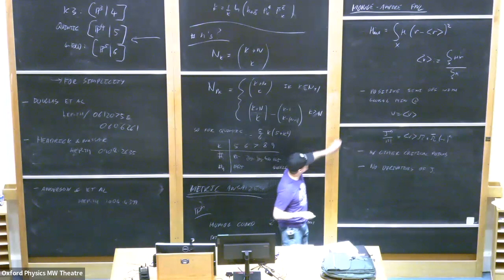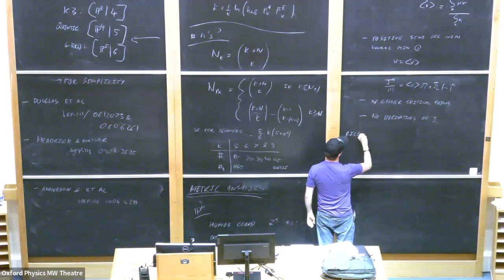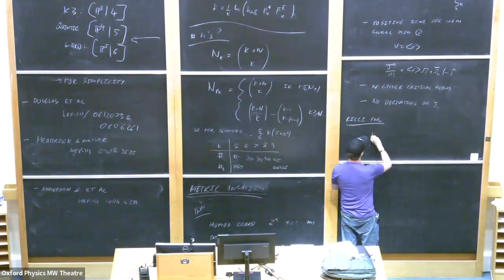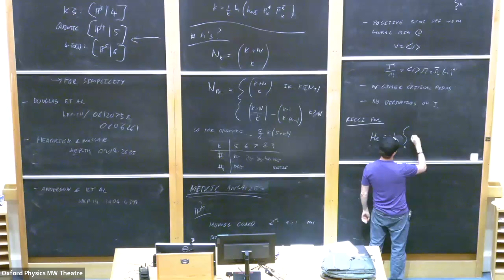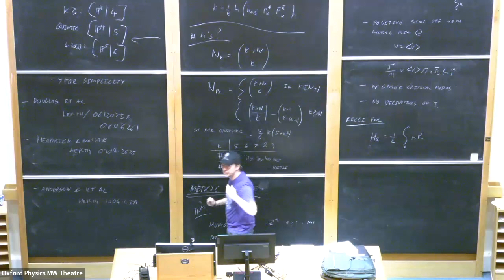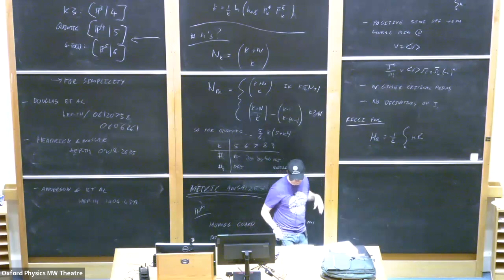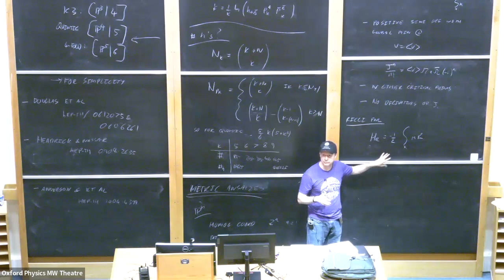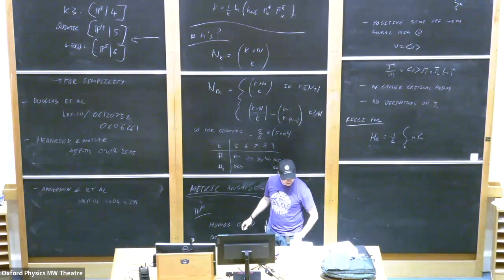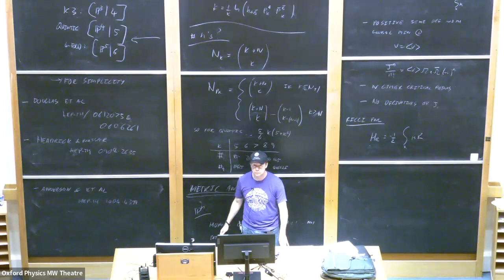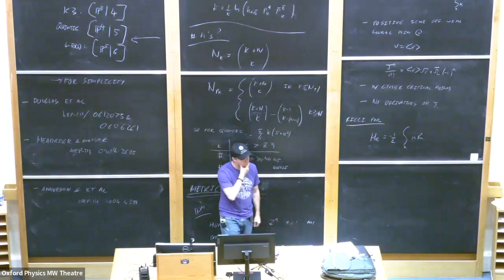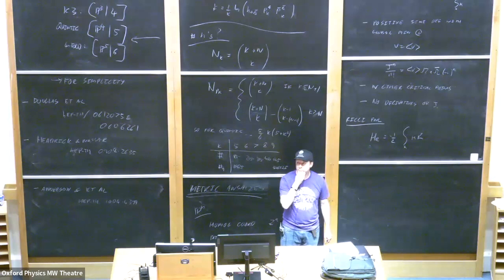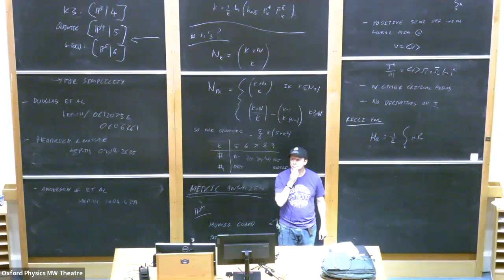The other functional we'll discuss next time is the Ricci functional. As you might imagine, it involves minimizing something related to the Ricci scalar — R_{i\bar{j}} g^{i\bar{j}} integrated over the manifold with appropriate factors. You can show that thing only has a minimum when the Ricci tensor vanishes. This one is a bit more problematic, at least in classical techniques, because it involves more derivatives, and classically it tends to work less well. We'll talk about that next time.